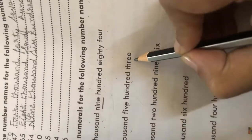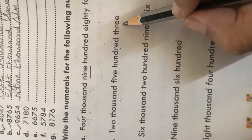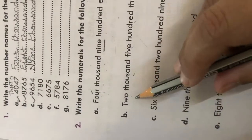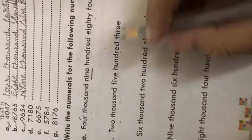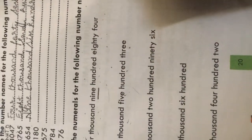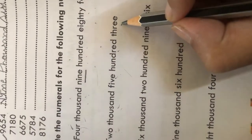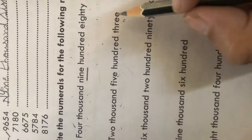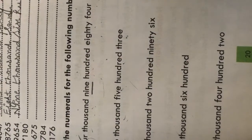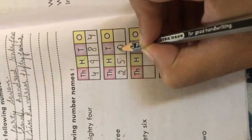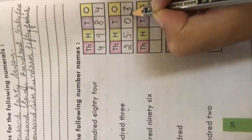Part B: two thousand five hundred and three — 2,503. At the thousands place we write 2. At the hundreds place we have 5, giving us 2,500. There is no tens value mentioned, so at the tens place we write 0. At the ones place we write 3. The numeral is 2,503.